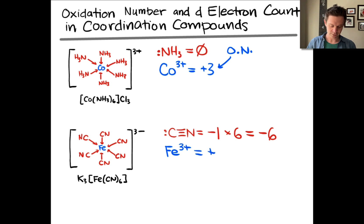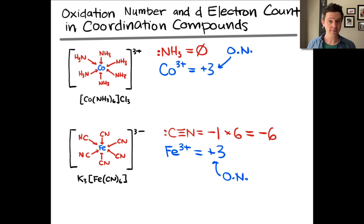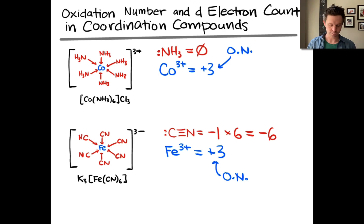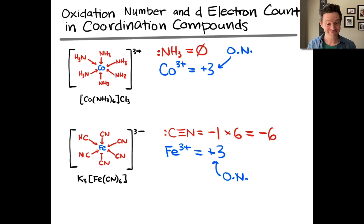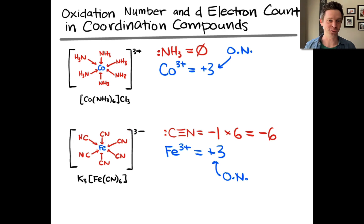So the iron is in the plus 3 oxidation state. Notice that the sum of all the charges on the ligands — negative 6 — and the oxidation number of the metal cation — positive 3 — add up to the overall charge on the complex: negative 3. Negative 6 plus 3 equals negative 3, the overall charge on the complex.